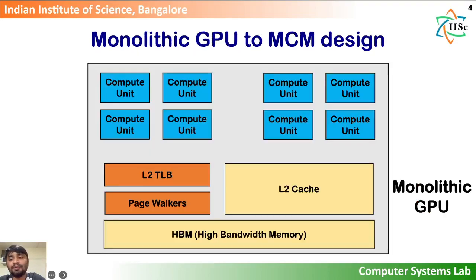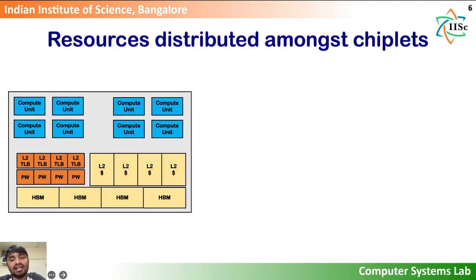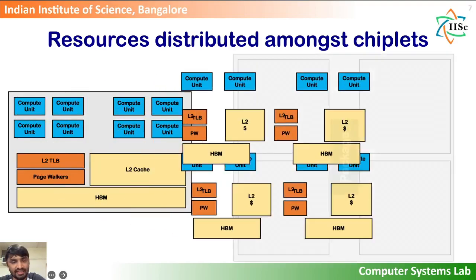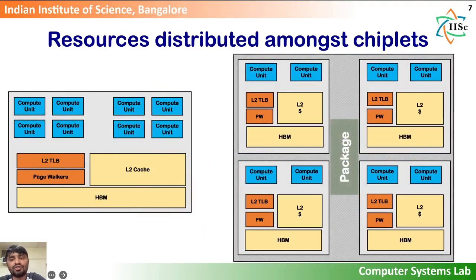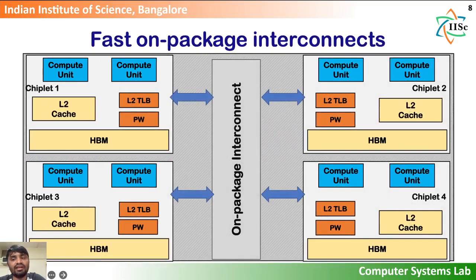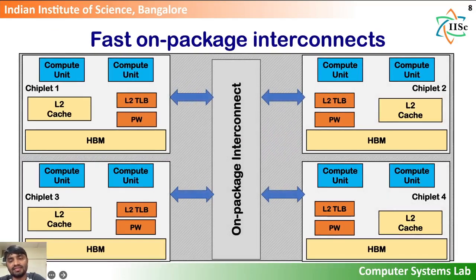Therefore, GPU manufacturers are moving from single-chip monolithic designs to multi-chip module or MCM GPUs. A monolithic GPU has all its resources — like compute units, L2 cache, L2 TLB, page walkers, and high bandwidth memory — on a single die or chip. With the transition to MCM design, the resources of a monolithic GPU are distributed amongst multiple smaller chiplets. These chiplets are interposed on a package and connected to each other via fast on-package interconnects.